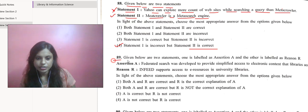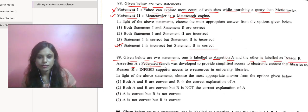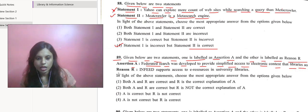Coming to the next question. Given below are two statements - one labeled as Assertion A and the other as Reason R. Assertion says federated search was developed to provide simplified access to electronic content that libraries accept. Reason R says federated search supports access to e-resources in university libraries. For this one, both A and R are correct, but R is not the correct explanation for A.